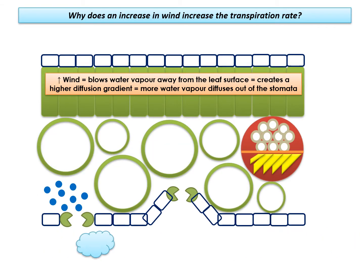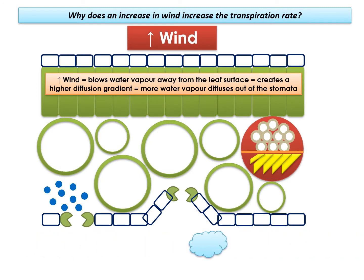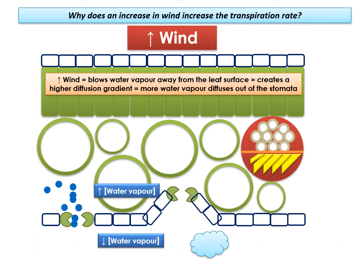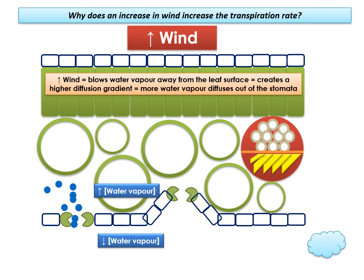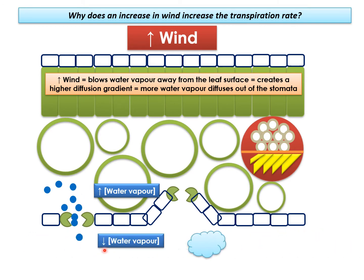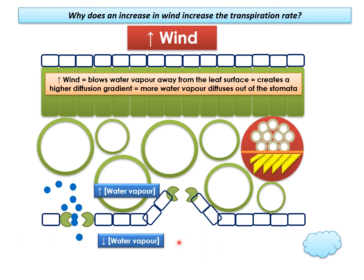Wind is another factor that affects transpiration. With increased wind speed, as water vapor is lost through the stomata, the wind blows it away from the surface of the leaf. This means we continuously have a very high diffusion gradient, with a high water vapor concentration on the inside of the leaf accumulating due to transpiration pull, while the wind continuously removes water vapor from the surface, creating a lower concentration on the outside. Because the gradient remains very steep, the rate of transpiration will be very high.